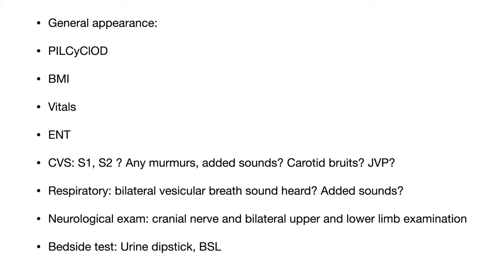For the systemic examination, prioritize based on the presenting symptom. For shortness of breath, ask about the respiratory and cardiovascular systems first. For numbness and tingling in the lower limbs, begin with the lower limb neurological examination — both sensory and motor — before moving on to other systems.